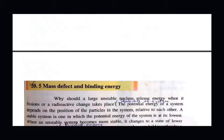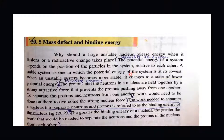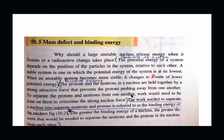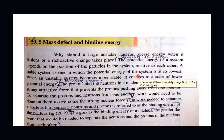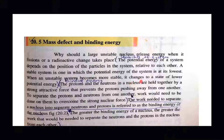Let's start with mass defect and binding energy by first understanding the stability of the system. Stability of the system is relevant to the potential energy of the system. The position of particles in a system depends upon the potential energy. If you have more potential energy, your system will be unstable because particles will tend to change their position. When an unstable system becomes more stable, it changes to a state of lower potential energy.